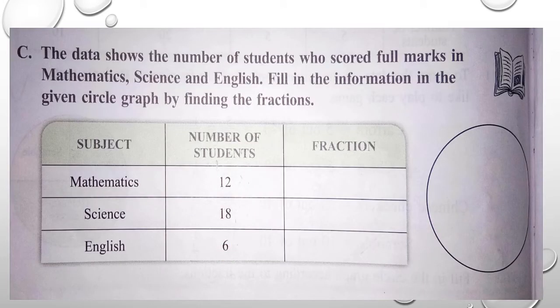Now next, question C: the data shows the number of students who scored full marks in mathematics, science, and English. Fill in the information in the given circle graph by finding the fractions.